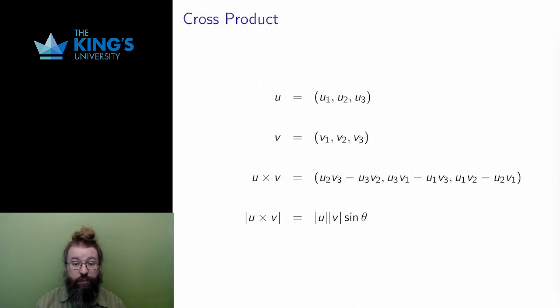The dot product can be defined in any dimension by extending the formula, multiplying the matching terms and adding them up. In R3, however, there is a second product which is unique to R3 and doesn't extend to other dimensions. This is the cross product. Given two vectors, u and v in R3, the cross product is written with this old school multiplication symbol, and is calculated by this strange combination of addition and multiplication. It produces a new vector in R3, not a scalar like the dot product.